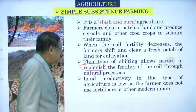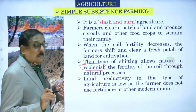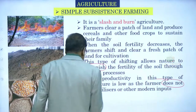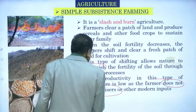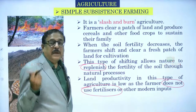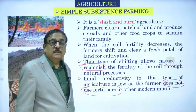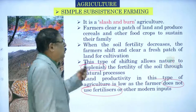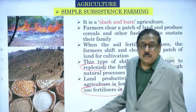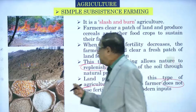Land productivity in this type of agriculture is low as the farmer does not use fertilizers and other modern inputs. At most, they may apply some cattle dung manure, but cannot afford fertilizers or other inputs, so the yield obviously goes down after a few seasons.